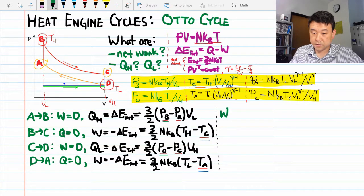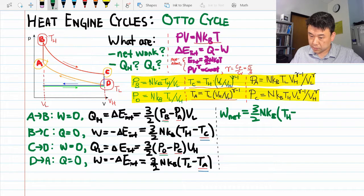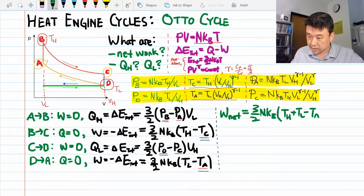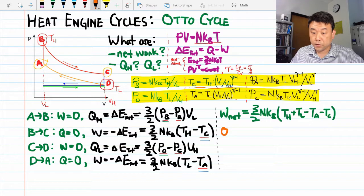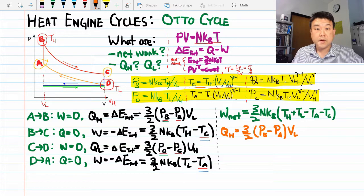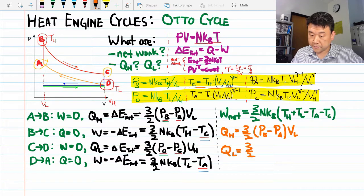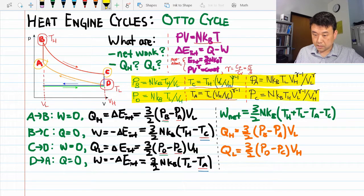And plug them into the formulas I'm going to write down right now. Now, the network done is 3/2 NK times (TH + TL - TA - TC). And the heat inflow QH is 3/2 (PB - PA) VL. And the heat outflow is 3/2 (PD - PC).